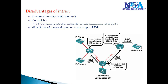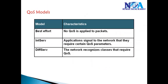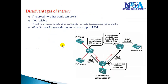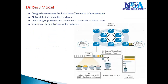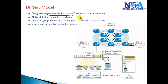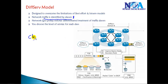In today's networks we don't use these two models. Best Effort has no differentiation, and Integrated Services reserves a specific amount of bandwidth for each flow. Today's networks use the Differentiated Services model, which was introduced to overcome the limitations of both previous models. Here, each and every traffic type is identified based on different classes.